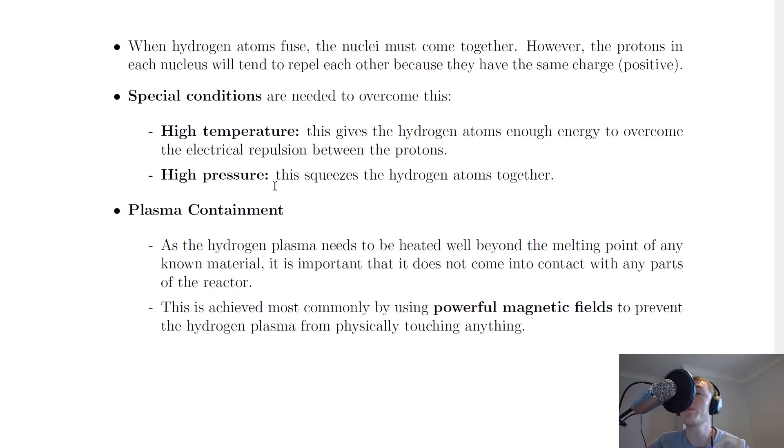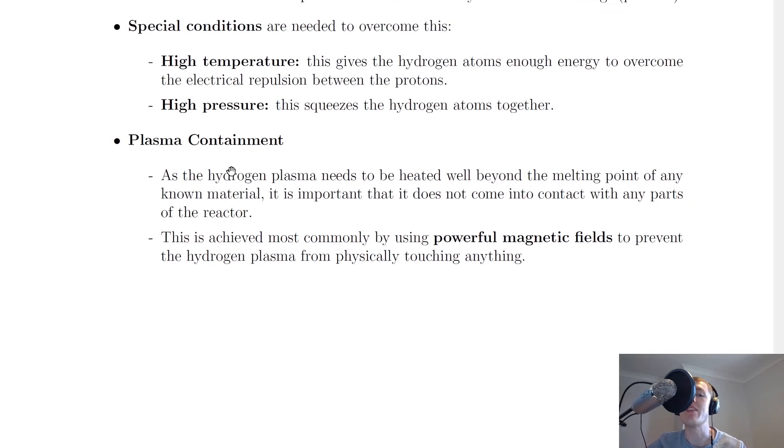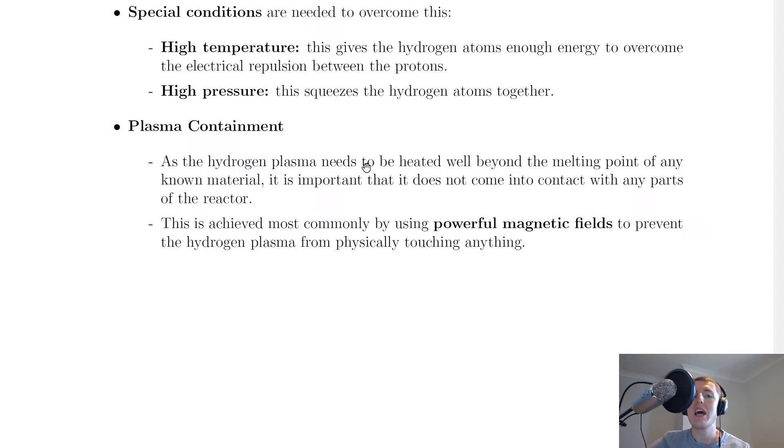Something that needs lots of consideration if you want to use a nuclear fusion reactor is this thing called plasma containment, and this is really important for you to remember. As the hydrogen plasma needs to be heated well beyond the melting point of any known material, it is important that it does not come into contact with any parts of the reactor. This is because it's going to melt any parts of the reactor because it's hotter than any known material.